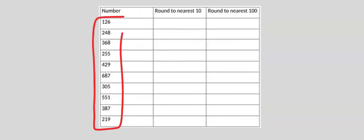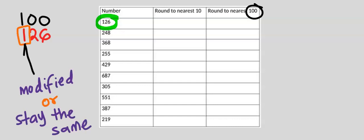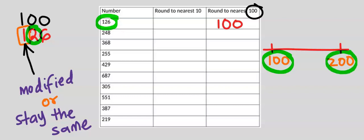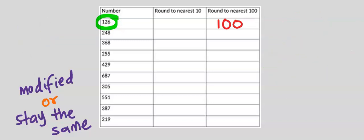We're going to round these numbers to the nearest hundred. Let's consider 126. We're going to round this to the nearest hundred, so we have zero, zero, one. The number one will be modified or it will stay the same. But two is not up to five, hence this one remains the same and the two and the six become zero. That is, 126 is closer to 100 than to 200, and in between is 150 — 126 is somewhere here. The nearest hundred of 126 is 100.